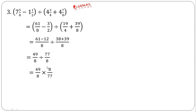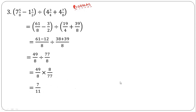As stated earlier, change the division to multiplication and flip the second fraction upside down. Simplifying: 8 cancels 8, 7 cancels to leave 7 and 11. So the final answer is 7 over 11.